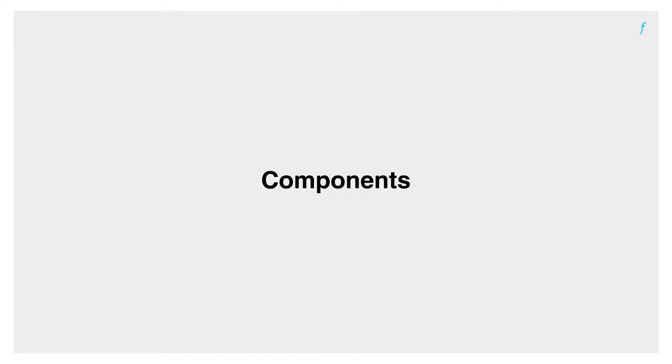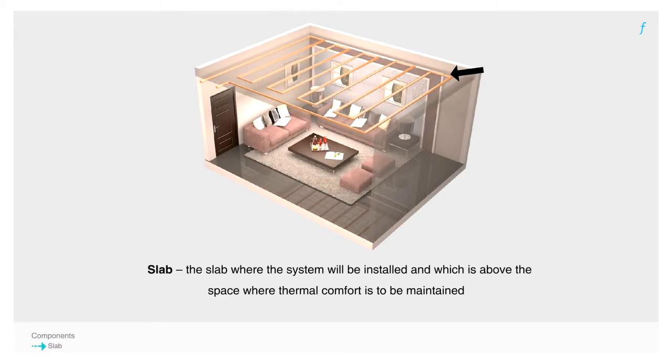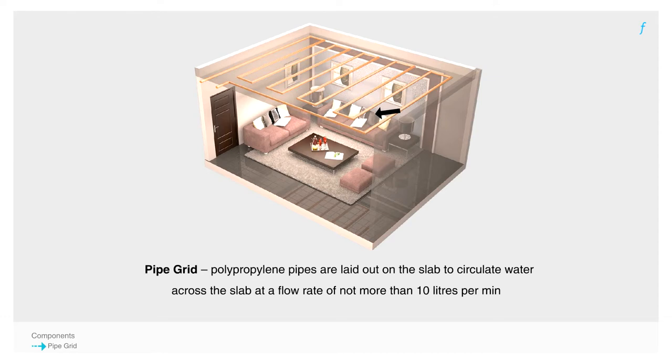Let's now have a look at the components involved. The slab: the slab over or under the area for which the system will be installed. Pipe grid: polypropylene pipes are laid out on the slab to circulate water across the slab.